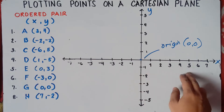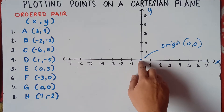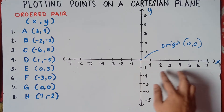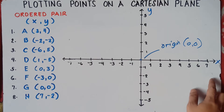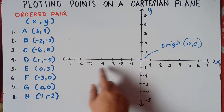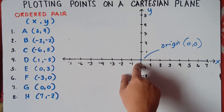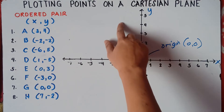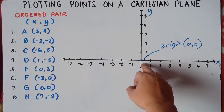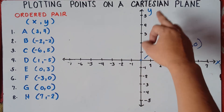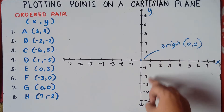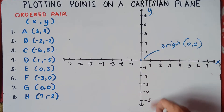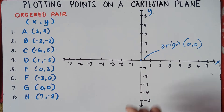For the x-axis, on the right side of the origin, those are positive numbers. And on the left side of the x-axis, those are negative numbers starting from the origin. So negative numbers on the left, positive numbers on the right. Now for the y-axis, above the origin we have positive numbers, and below the origin we have negative numbers.